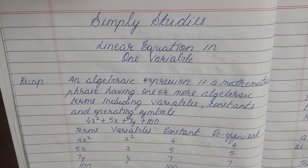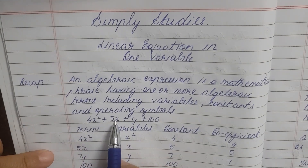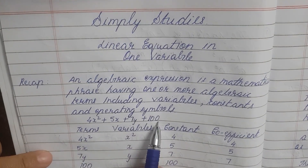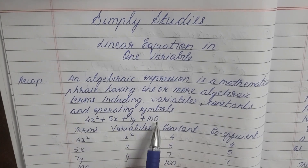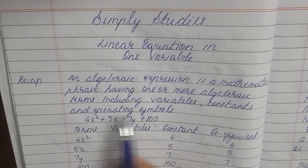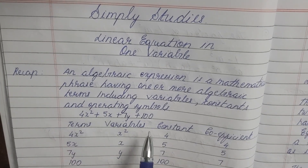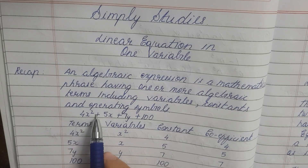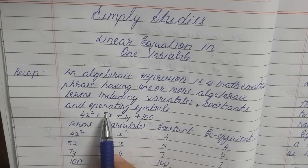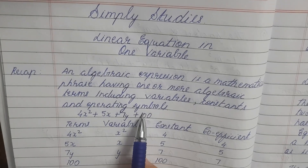We will see each and everything with an example. In this example, it is 4x squared plus 5x plus 7y plus 100. So this is an algebraic expression — it is a phrase. In this phrase, we are looking at an algebraic expression. In the phrase, we have terms: 4x squared is one term, 5x is one term, 7y is one term, and 100 is one term.